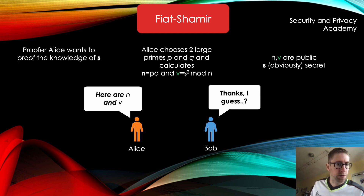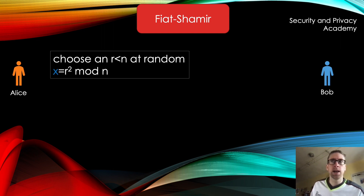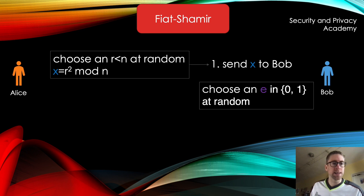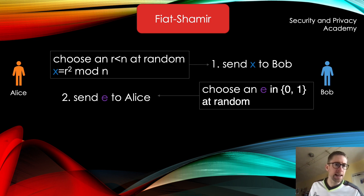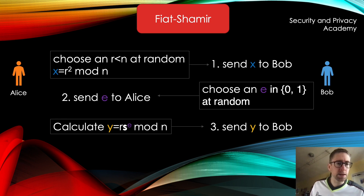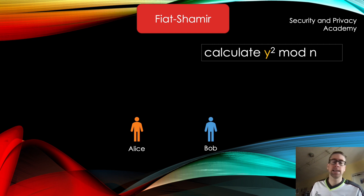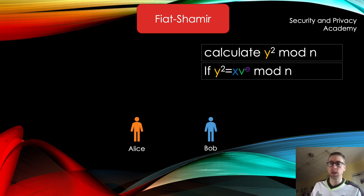Here is how the protocol works. Alice chooses a random number r, which is smaller than n, calculates x as r squared, and sends it to Bob. Bob then chooses e, which is either 0 or 1, and sends this e to Alice. Alice calculates variable y using the random number r, the secret s, and Bob's e, then sends y to Bob. Bob verifies by calculating y squared and comparing it to x times v to the power of e. If these two match, Bob accepts the proof.